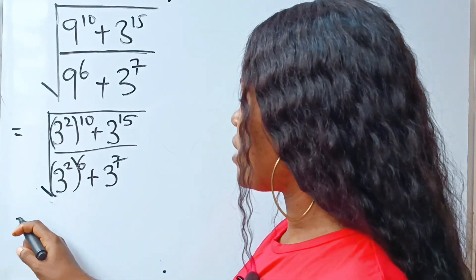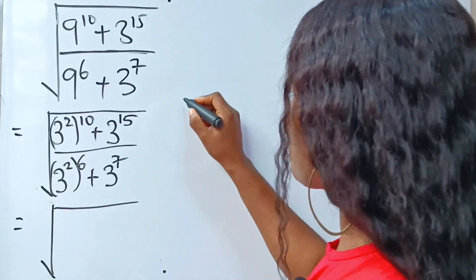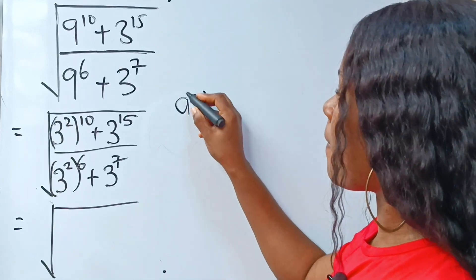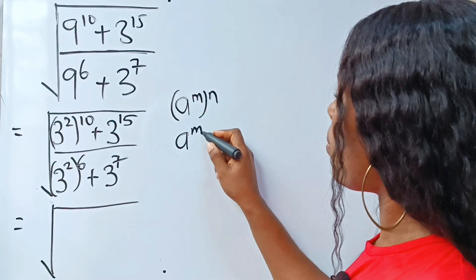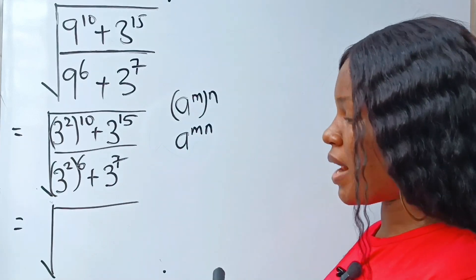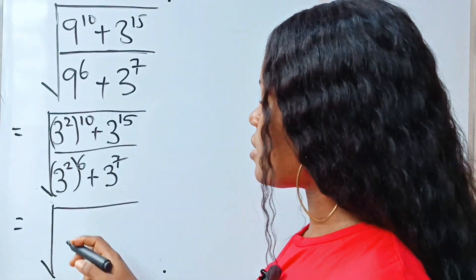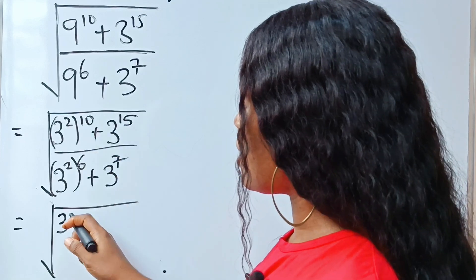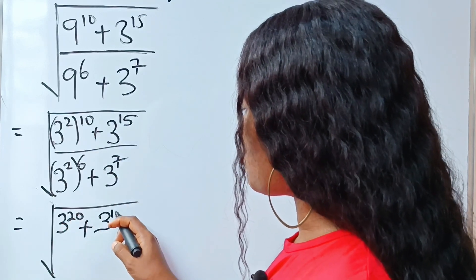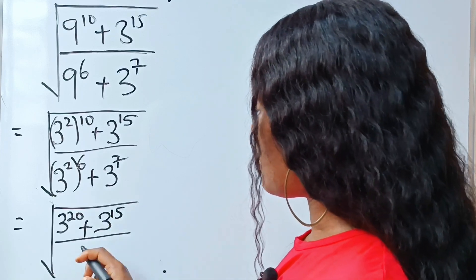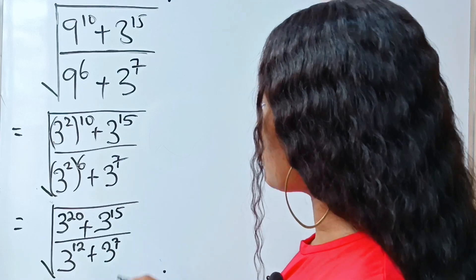Now this is equal to the square root of — when you have a to the power of m raised to the power of n, just multiply the powers to get one power. So we have m multiplied by n. That means we can rewrite this as square root of 3 to the power of 20 — since 2 times 10 is 20 — plus 3 to the power of 15, divided by 3 to the power of 12, plus 3 to the power of 7.